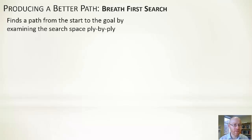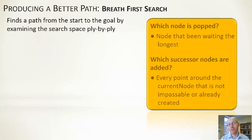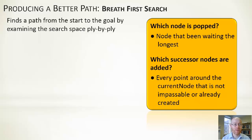Breadth-first search finds a path from start to goal by expanding layer by layer until we reach the target location — a ply-by-ply expansion. Key question: which node is popped? The node that's been waiting the longest — a queue-based structure, first in, first out. Which nodes are added? Every single one not already on the open list that hasn't been visited.